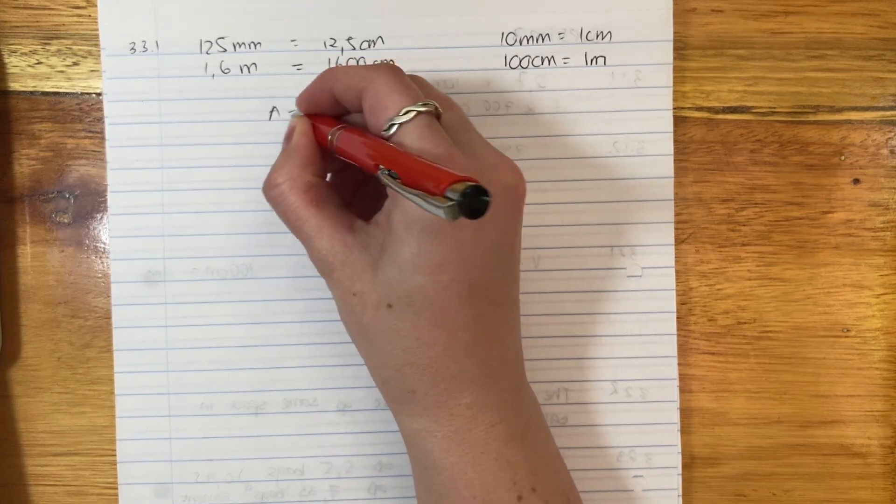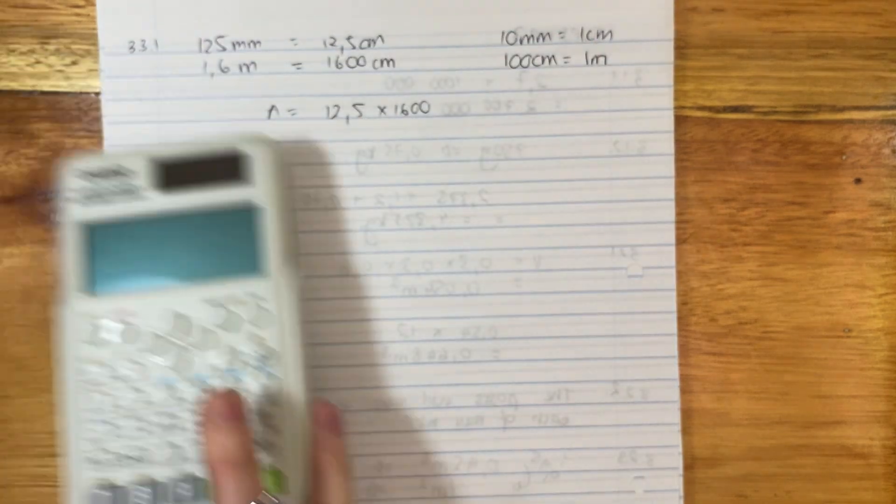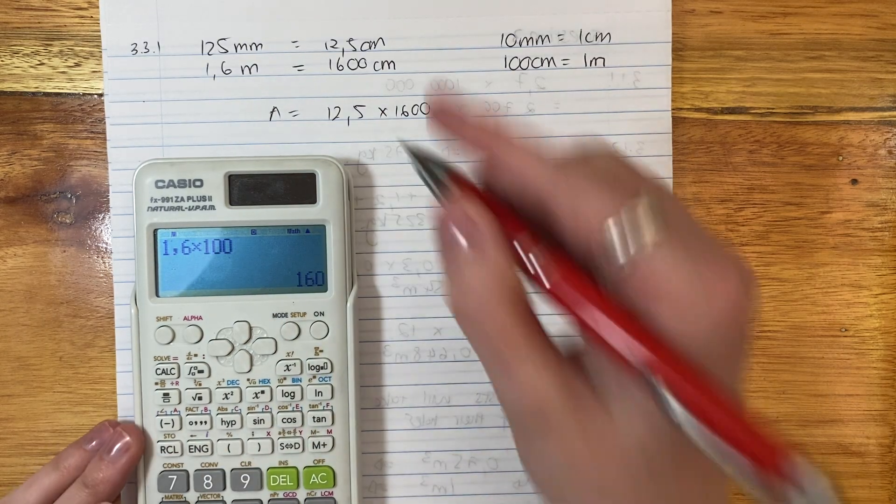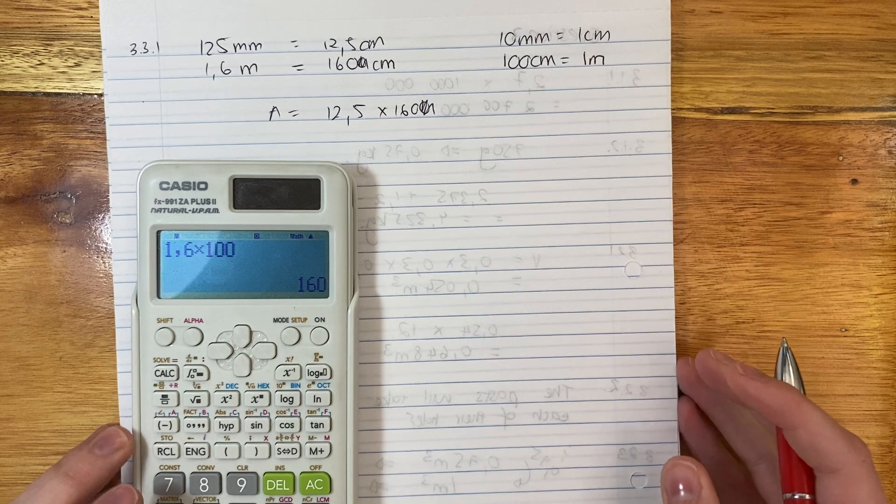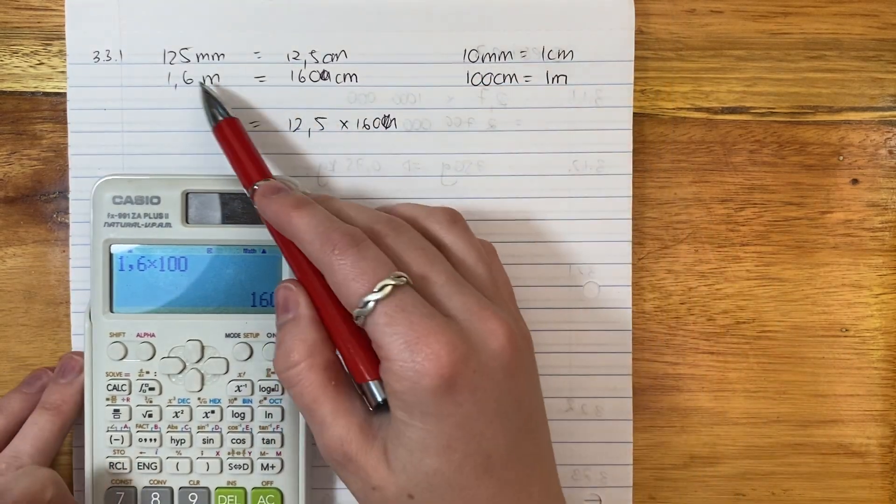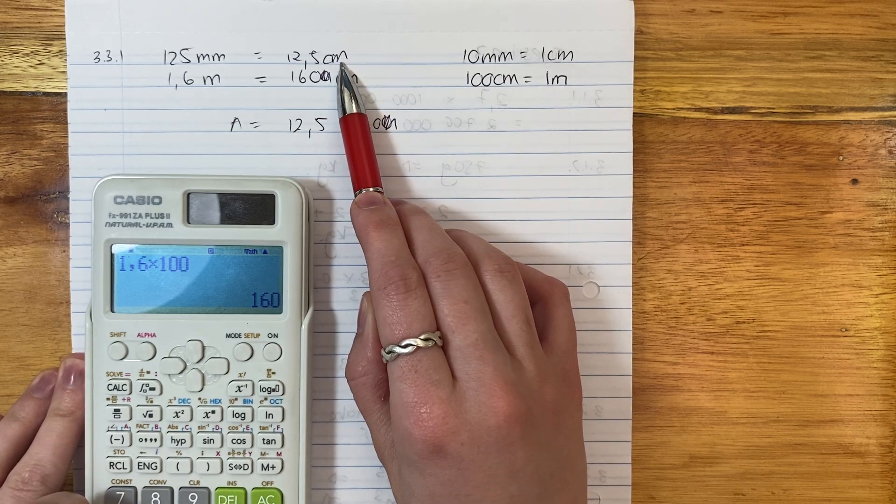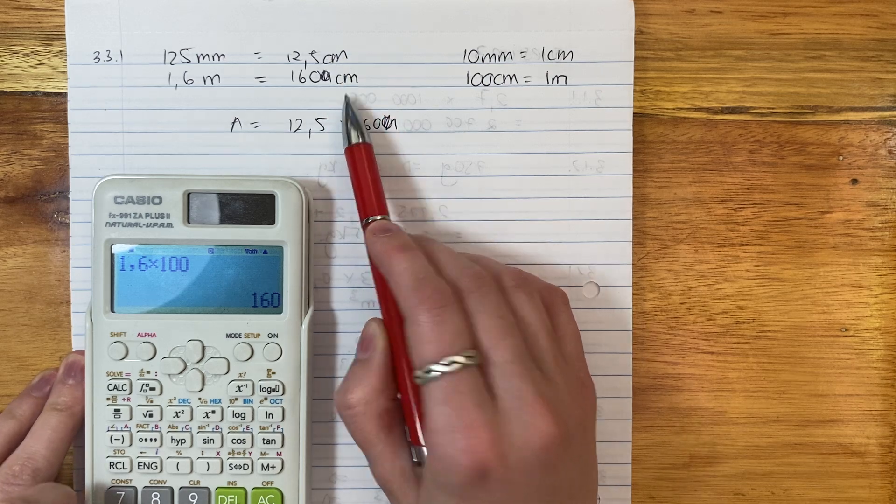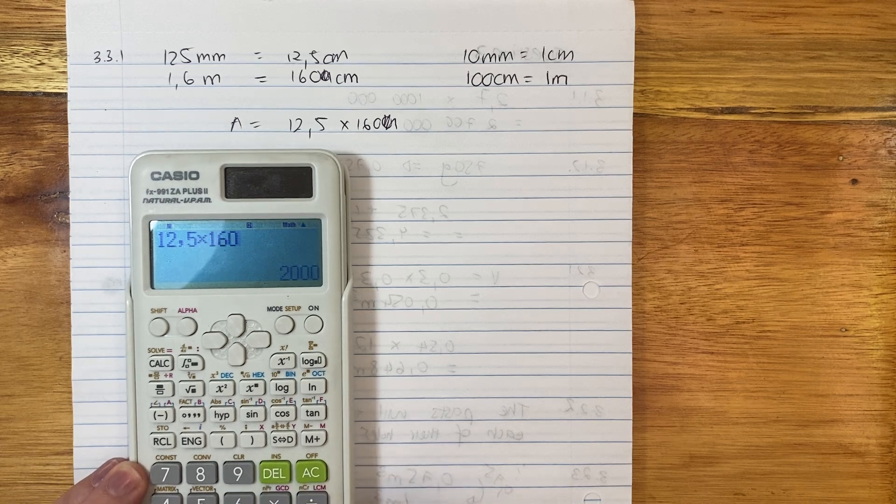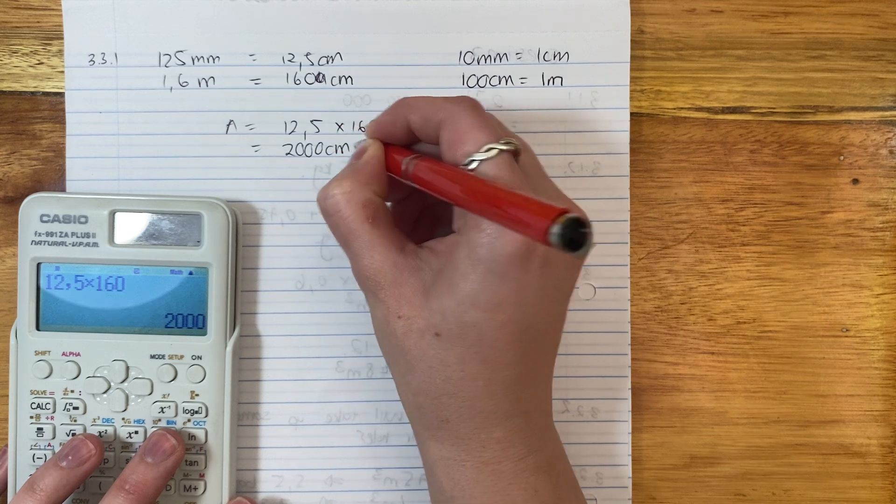We're going to say 125 millimeters equals 12.5 centimeters. That's the first thing you're going to do. Because there are 10 millimeters in one centimeter. So I literally just divided by 10. Then I'm going to say 1.6 meters equals 160 centimeters, because 100 centimeters equals 1 meter.